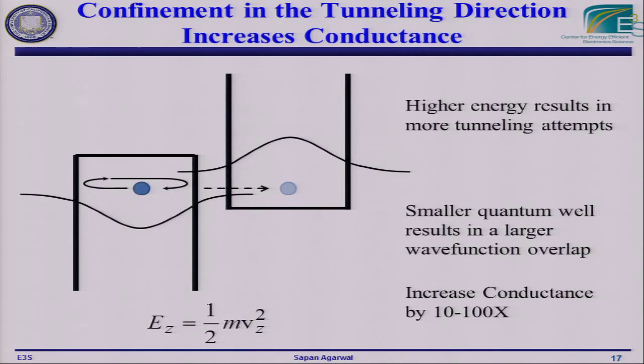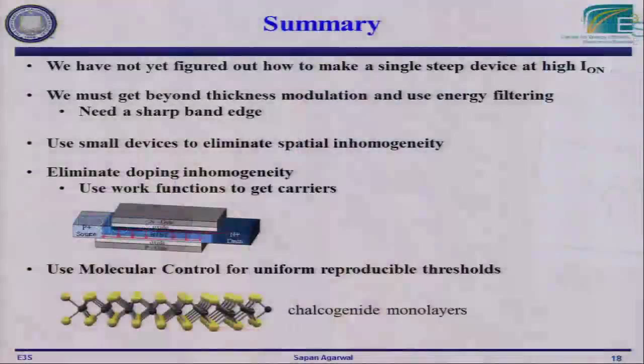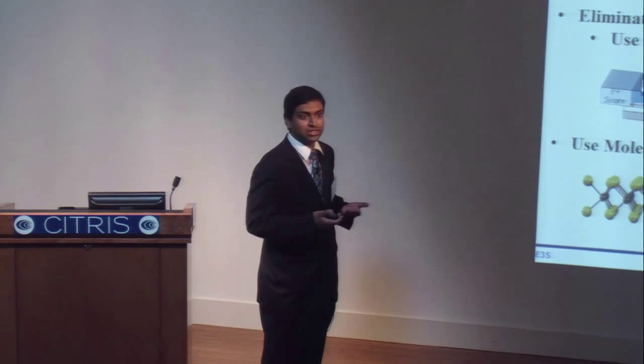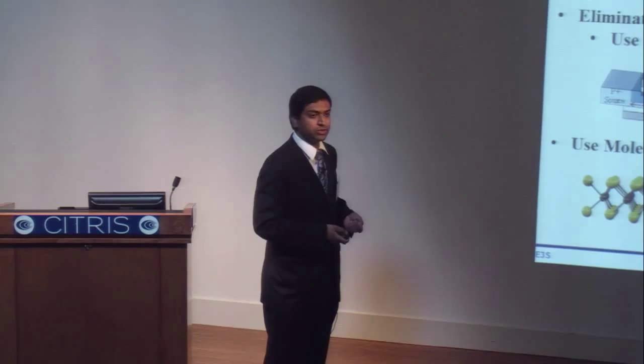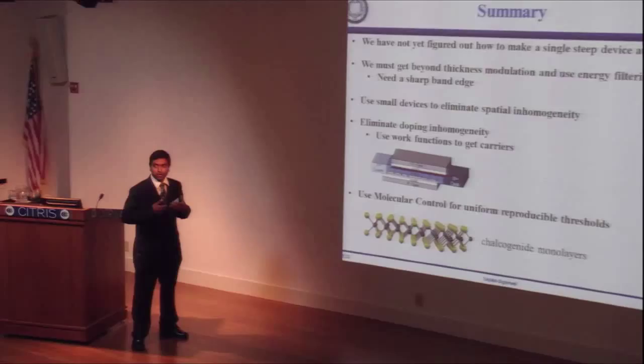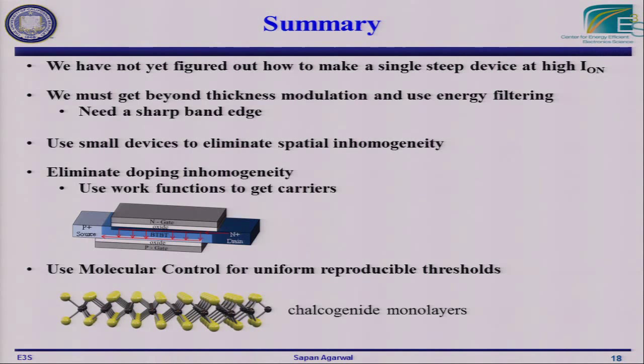To summarize: so far we haven't made a single steep device at high on-current. To do that, we have to get beyond thickness modulation and rely on density-of-states switching. To achieve that, we need to eliminate spatial inhomogeneity by using small devices, eliminating doping from the junctions, and looking into materials with better atomic control. Thank you. Any questions?